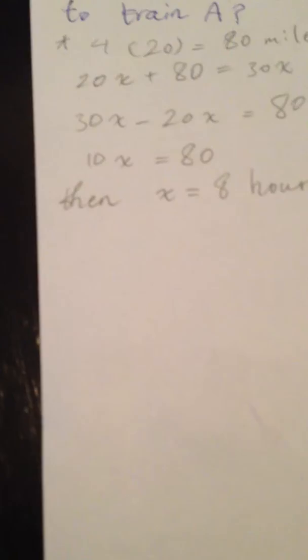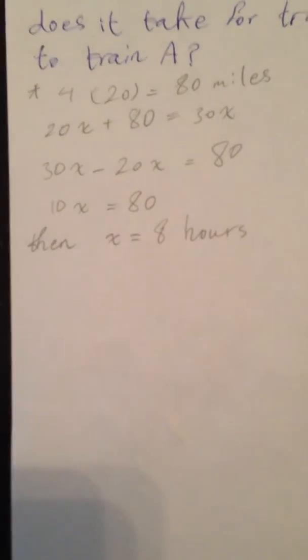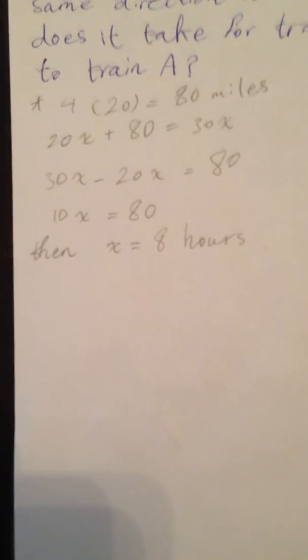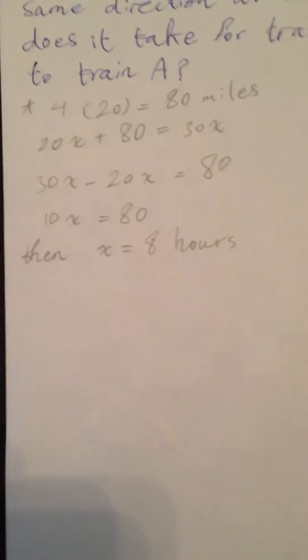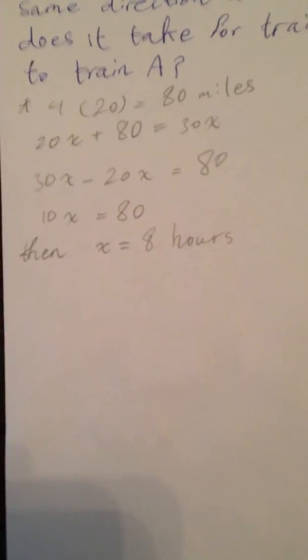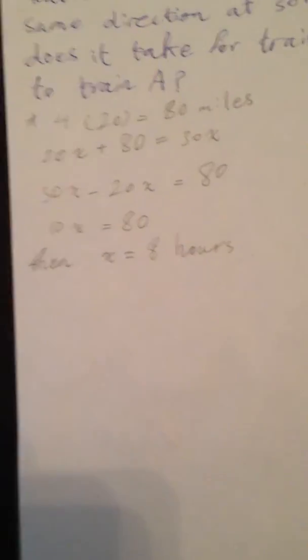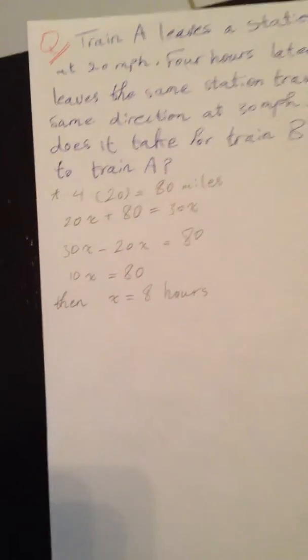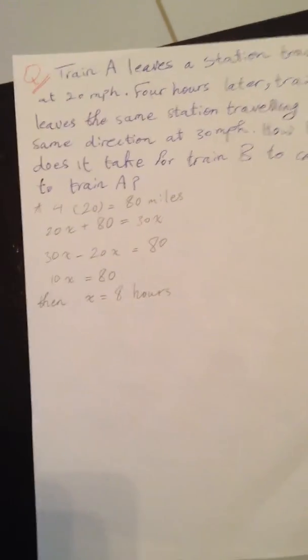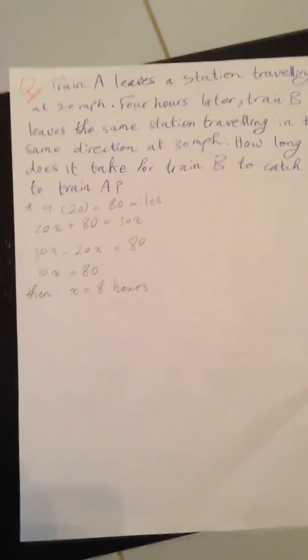So 30x minus 20x equals 80, and then x equals 8. So it takes eight hours for train B to catch up with train A.